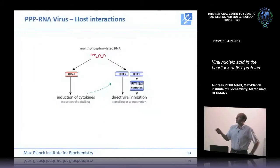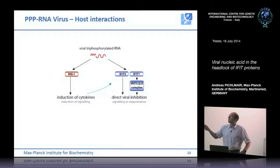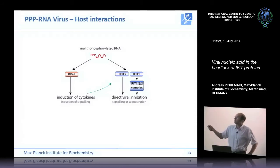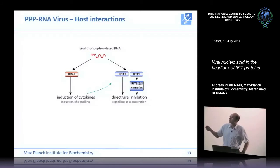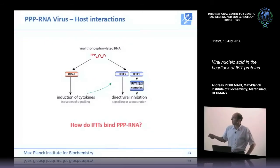Altogether, we think there are two different IFIT sensors in the cell. One is RIG-I sensing of PPP RNA to induce type 1 interferon. The other is an IFIT1/2/3 complex that binds to PPP RNA, while IFIT5 also binds to PPP RNA but does not require complex formation. A key question was how IFITs really detect PPP RNA.